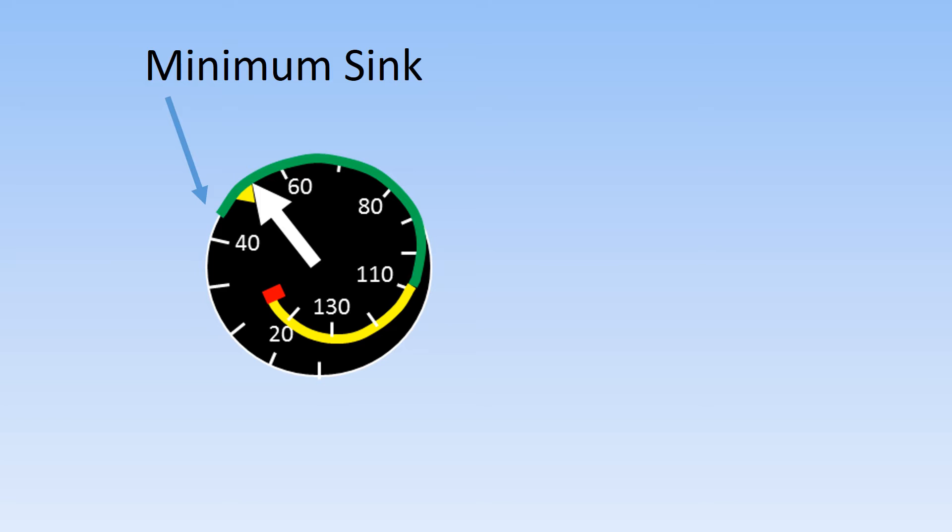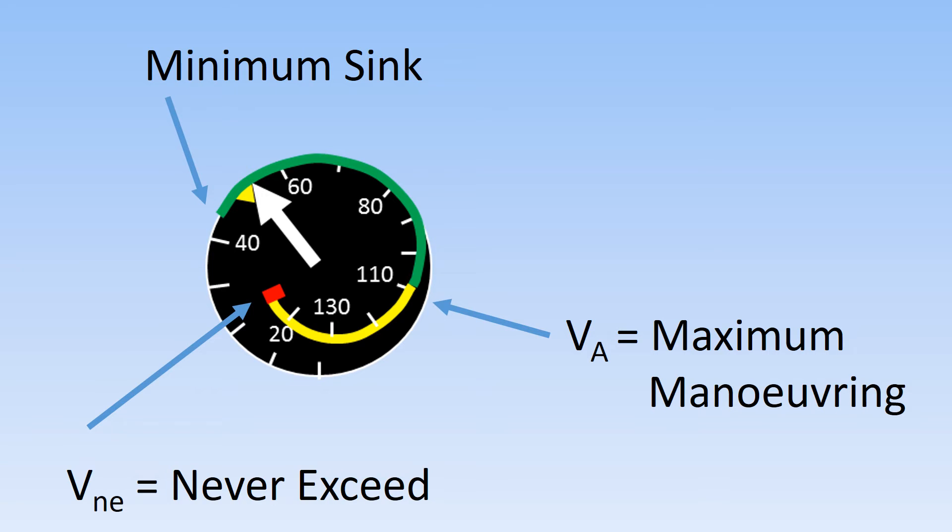The green arc stops at the maximum maneuvering speed, above which you must only use small control deflections. The red line marks VNE, the maximum speed that you should never exceed as it will cause serious damage to the glider. There is more complexity to airspeed limitations. For now, we will say that it is safe to fly within the green arc.